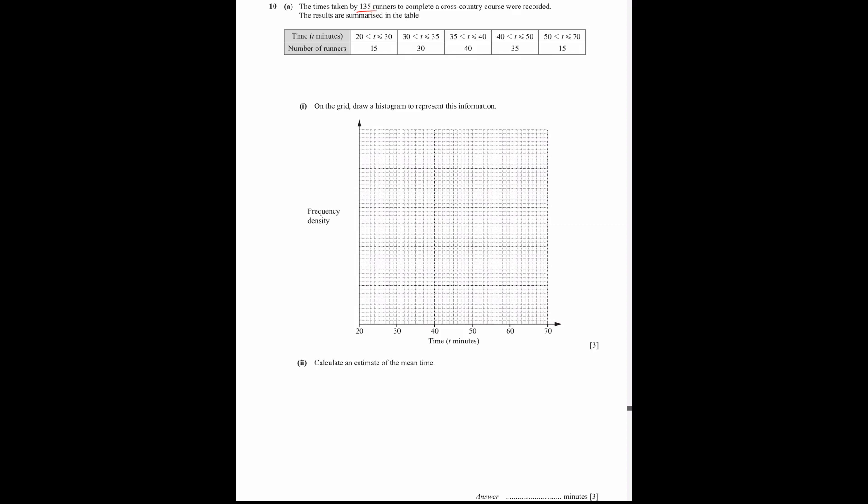Let's underline 135. How important is this? You will know it will be. On the grid, draw a histogram to represent this information.